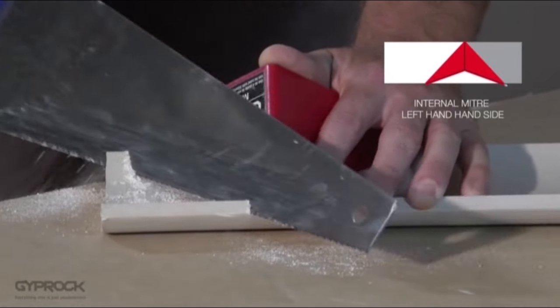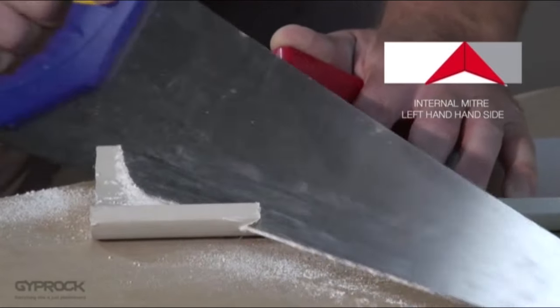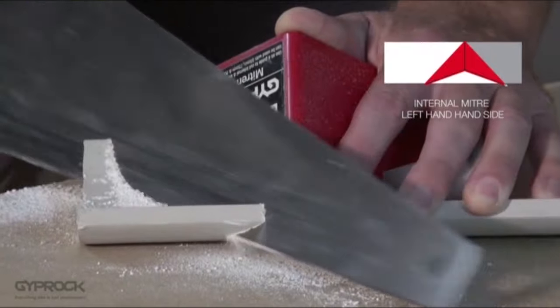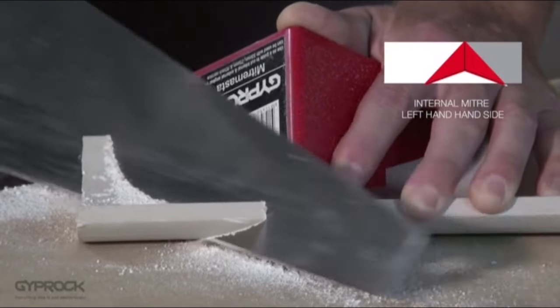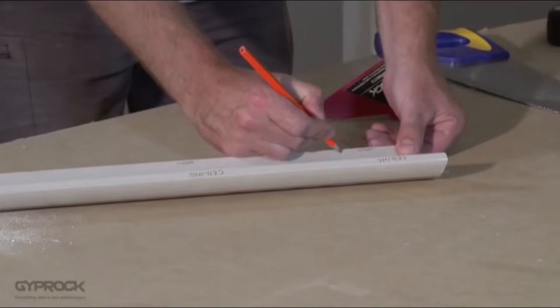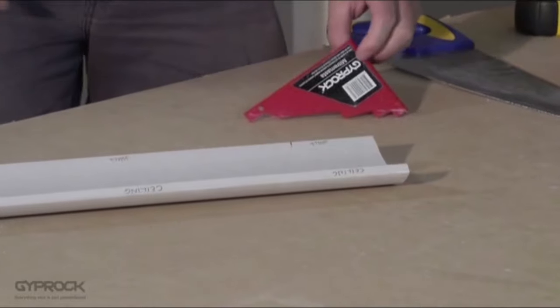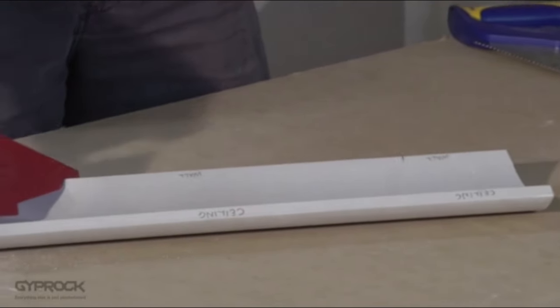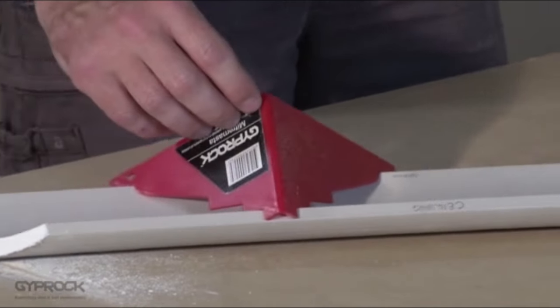Holding the mitre master firmly in place without bending the wings cut through the cornice keeping the face of your saw flat against the mitre master. With the first cut done you can now mark your wall length on the wall edge of the cornice and cut your next mitre. This time it will be the right side of an internal angle mitre.